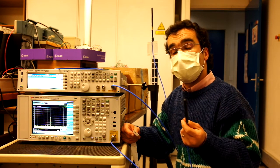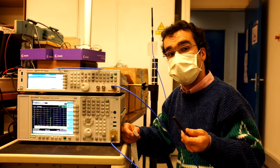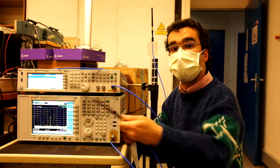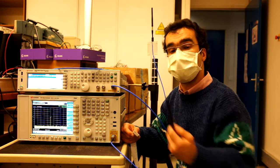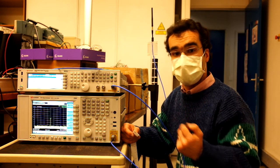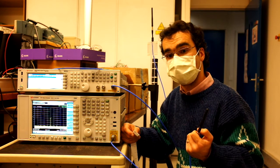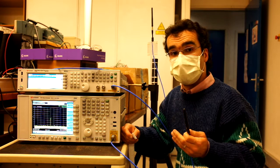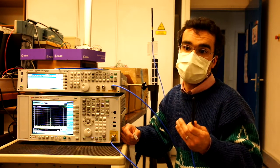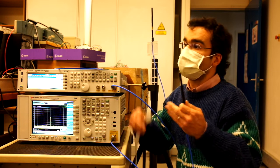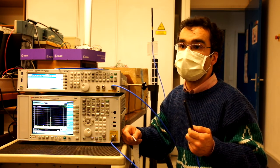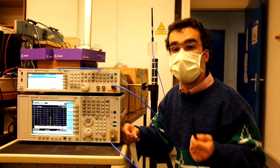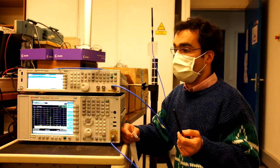One special characteristic of free space propagation is the decrease of 6 dB every time you double the distance. So that is a good check to see if your measurements are correct or not. Obviously since we are here in the lab room it is quite complicated to say that we are in free space, because we are in an indoor environment and so we probably get some reflections somewhere.